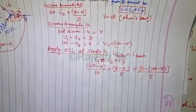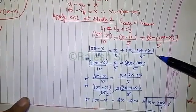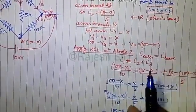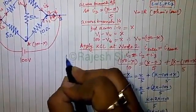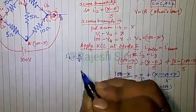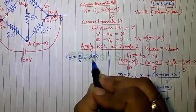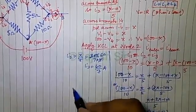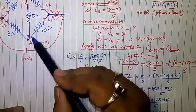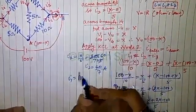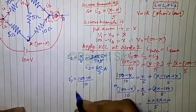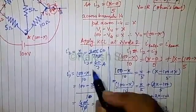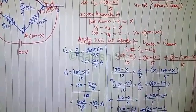Solving for x, we get x = 300/7 volts. Now, i2 = x / 5 = (300/7) / 5 = 60/7 amperes. And i1 = (100 − x) / 10, which on solving gives i1 = 40/7 amperes.